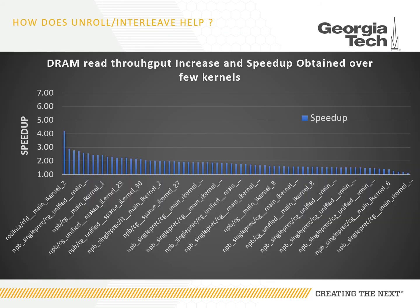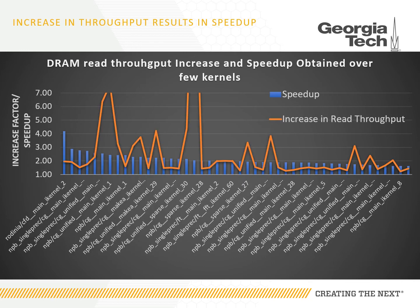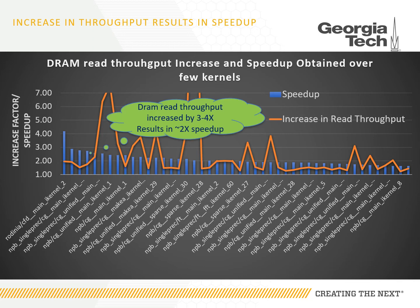So how does the transformation help? Here we see a few kernels that provide 2-3x speedup after unroll and interleave. As we plot the increase in DRAM read throughput over these kernels, we can see that DRAM read throughput increased by 3-4x and resulted in 2x speedup, which validates our hypothesis.